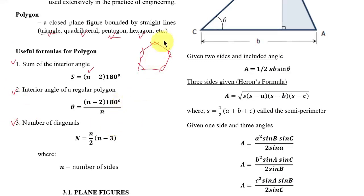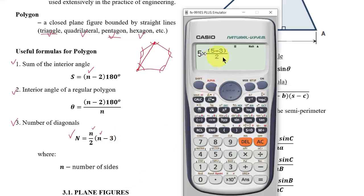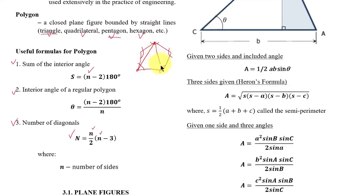For example, if we have a pentagon and want to solve for all the diagonals inside the polygon, the formula is N = n(n − 3)/2, where N is the number of diagonals and n is the number of sides. For a pentagon, that equals 5 — meaning we can draw five diagonals: one, two, three, four, and five.